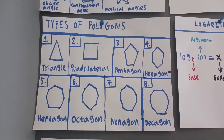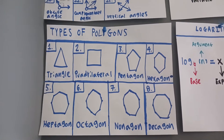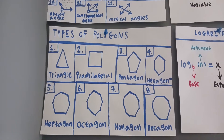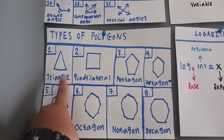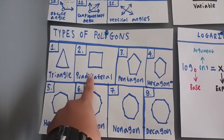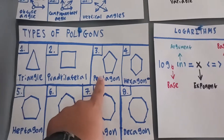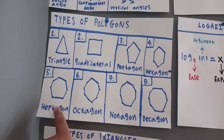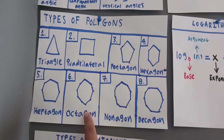Hi everyone, this is Angel the mathematician from Garcia Academy, and today we're going to talk about the types of polygons. So here we go: triangle, a quadrilateral also known as a square, pentagon, hexagon, heptagon, octagon.